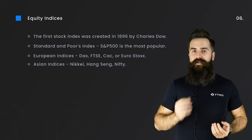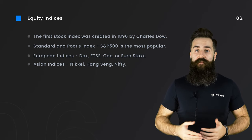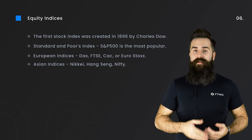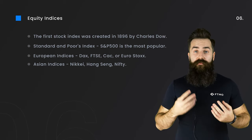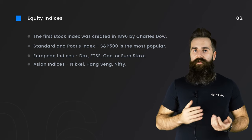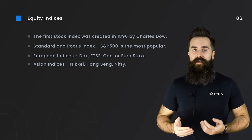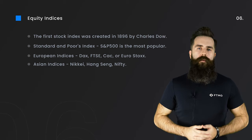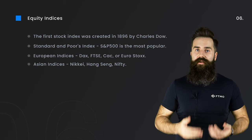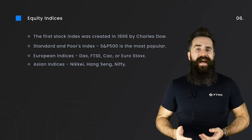Equity indices are one of the most popular instruments to trade. An equity index represents the value of a group of stocks from a given country and shows its current and historical performance. The first stock index was created in 1896 by Charles Dow — we can still trade it today as the Dow Jones index, which originally contained 12 largest US companies and now contains 30. The S&P 500 tracks the performance of 500 largest companies listed on US stock exchanges and is the second highest market by trading volume at CME futures exchange. The Nasdaq NQ 100 contains 100 largest companies in the technology sector and is characterized by high volatility, as technology stocks are very popular and traded very often.